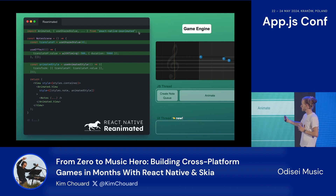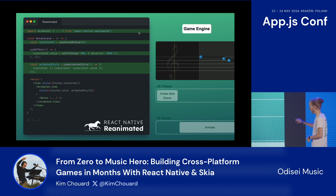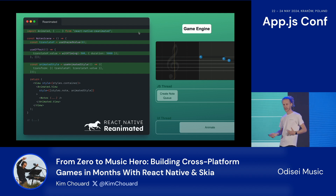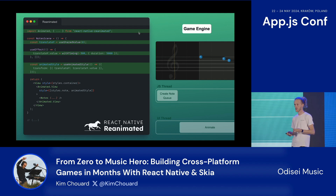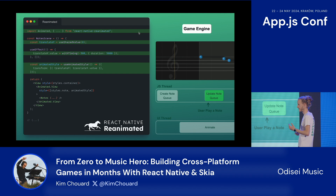Reanimated uses the same approach — you just pass the animated style to your view — but the API is a bit more intuitive. The beauty of this is we get the UI thread but with no limits; we can control everything. And also, everything is controlled from the UI thread, so you can have worklets and make computations, which again keeps the JS thread open so we can handle all the different notes and make sure that everything is okay.